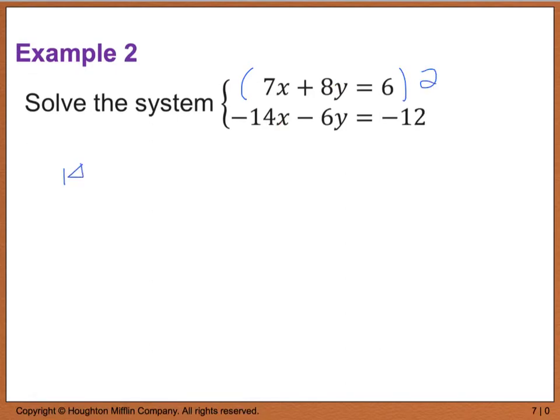This is going to give me 14x plus 16y equals 12. And my second equation, my negative 14x minus 6y equals a negative 12 is the same. I do apologize, your original equation should have been a 16, which makes that a 16.